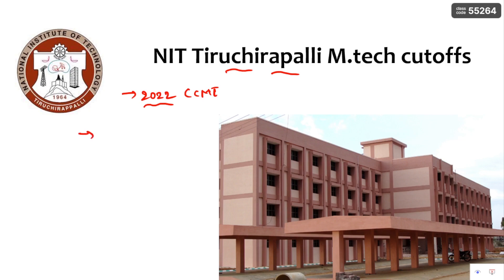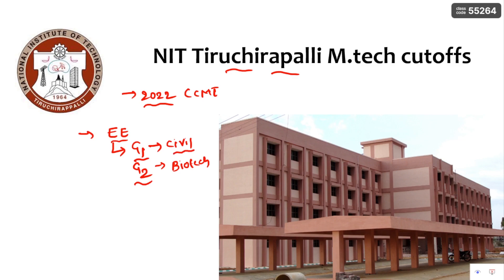First, I want to explain one thing. For example, if you take Double E, that is Environmental Engineering, NIT Trichy categorizes the admissions into two groups: Group 1 is based on the core branch, which is Civil Engineering, and Group 2 is based on other branches like Biotechnology and Environmental Science. In the CCMD website you will find cutoffs for both groups. I am going to mention cutoffs for core branches only in this table; for other cutoffs, go through the CCMD website.